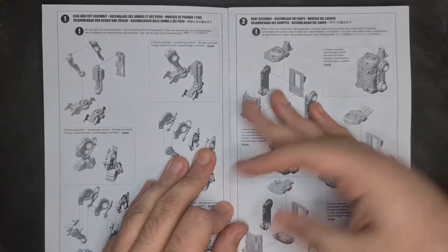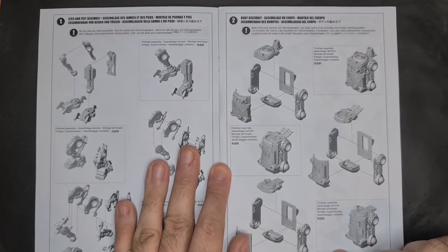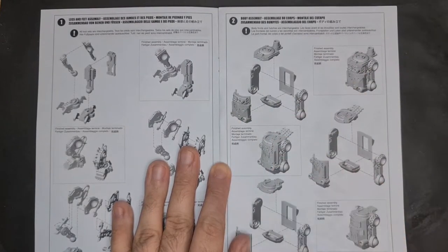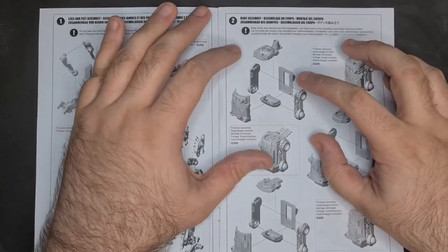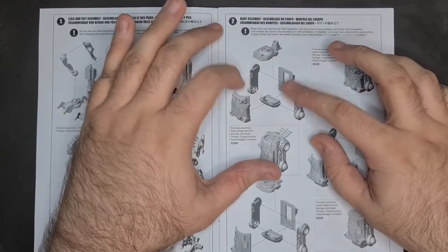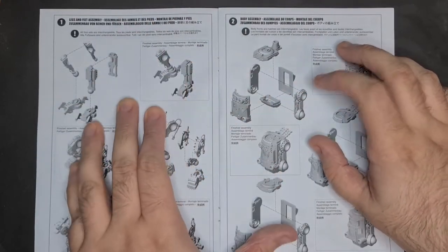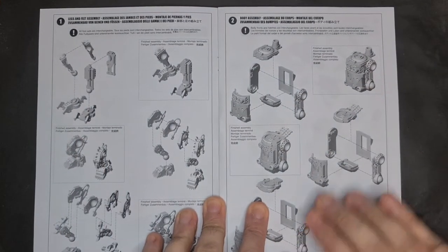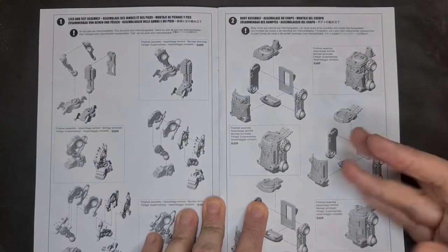Now step two is body assembly. Symbol again says body fronts and hatches are interchangeable. So you're almost making a box in the way. You've got your lid, you've got your sides, and they all come together. You've got your base, your top or your bottom. Finished assembly again. They're all quite similar but also slightly different, which is nice to have some variety.